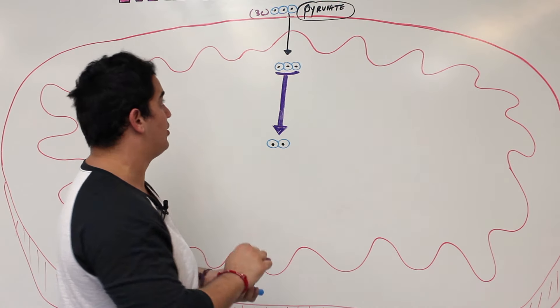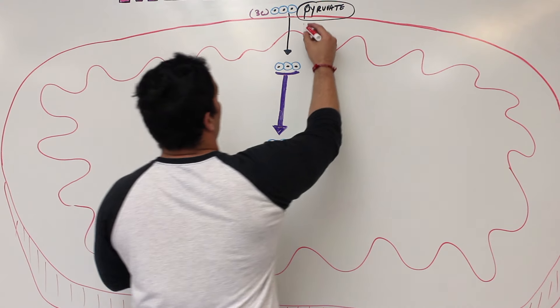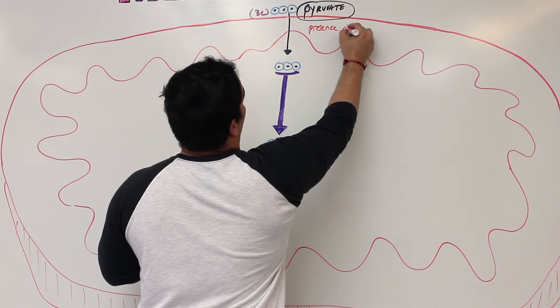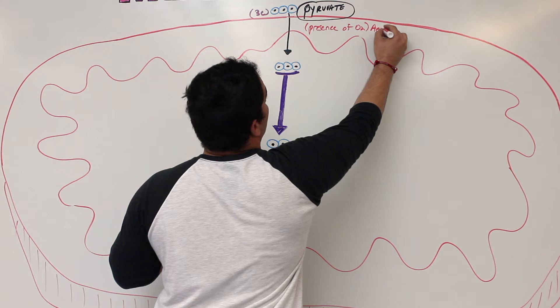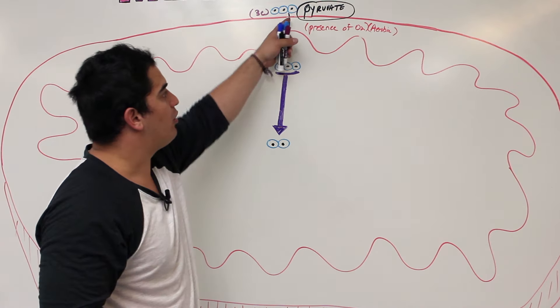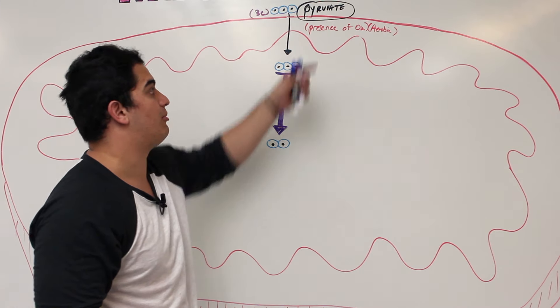It drops those hydrides off onto pyruvate and converts them into lactic acid and this pathway won't occur. But if there is oxygen, this is occurring in the presence of oxygen. In other words, it has to be under aerobic conditions.